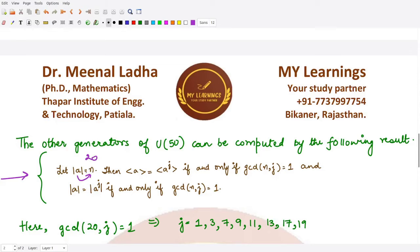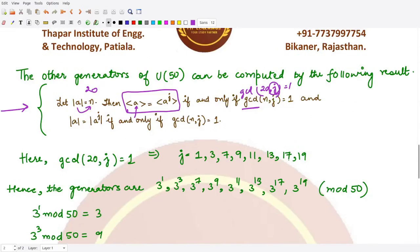If the order of the element is n = 20, other generators are obtained by taking powers 3^j of the given generator, where gcd(20, j) = 1. The values of j satisfying this condition are j = 1, 3, 7, 9, 11, 13, 17, and 19. We only look at numbers smaller than 20, since 3^20 cycles back through all elements.